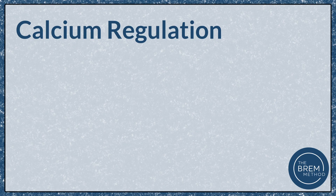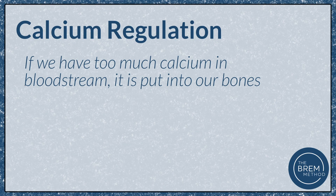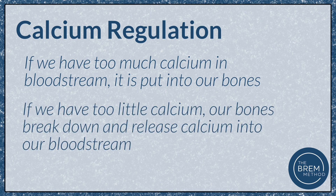The parathyroid glands are actually four small pea-sized glands on the back of your thyroid gland, kind of in your neck area. These are really important for producing parathyroid hormone, or PTH, as we'll call it for the rest of this video. PTH is our major hormone regulating calcium homeostasis. Calcium ions, Ca2+, get regulated by monitoring how much is in our bloodstream — if we have too much, we put it into our bones; if we have too little, we break down our bones to release more calcium into the bloodstream. But why is calcium so important?